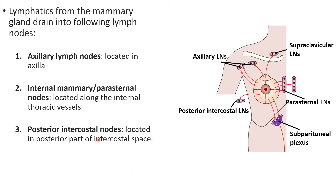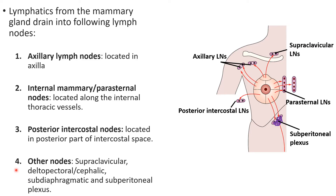Third are the posterior intercostal nodes — as the name suggests, they are present in the intercostal space on its posterior aspect, very close to the head of the ribs. We also have some other nodes into which lymph from the breast drains: the supraclavicular nodes, and the lymphatics from the breast also communicate with the subperitoneal and subdiaphragmatic plexus present in the abdomen.